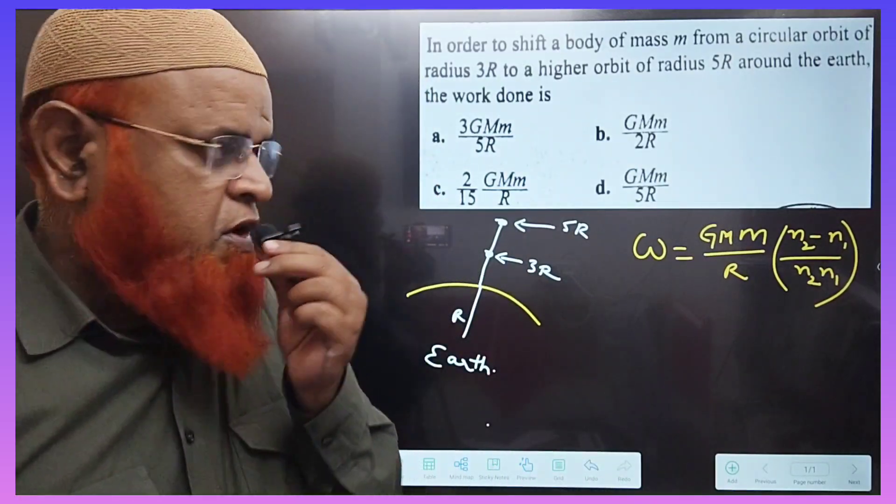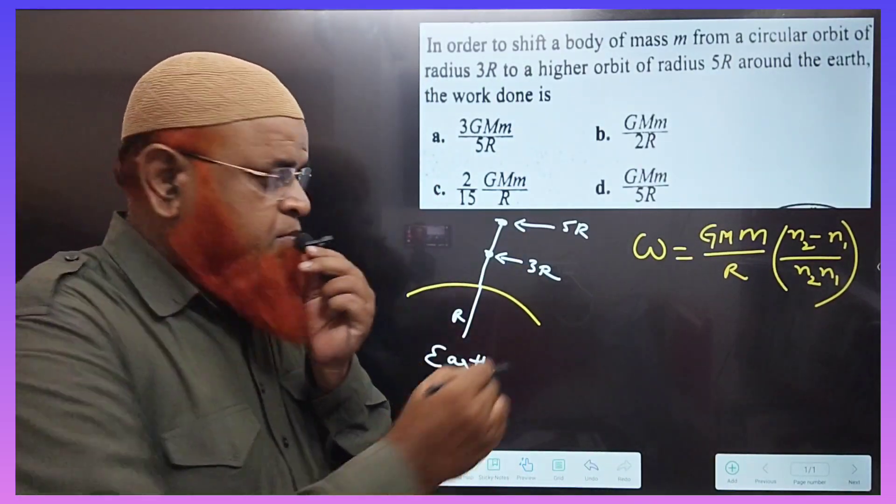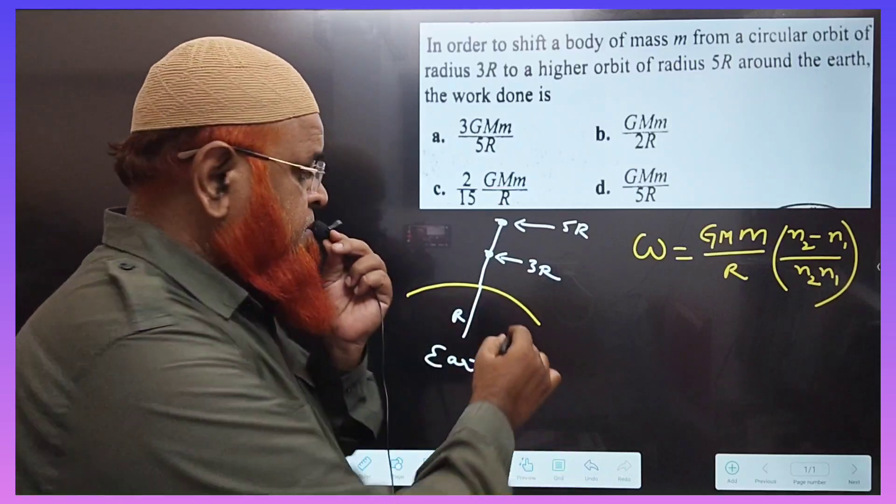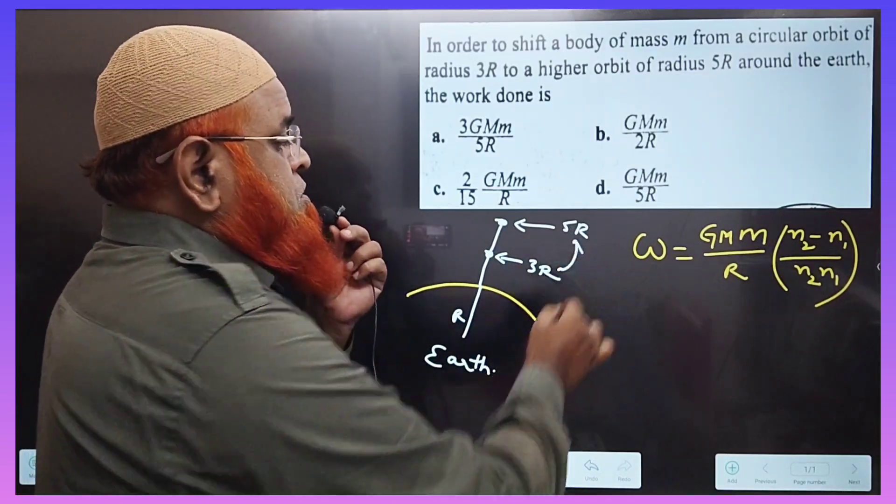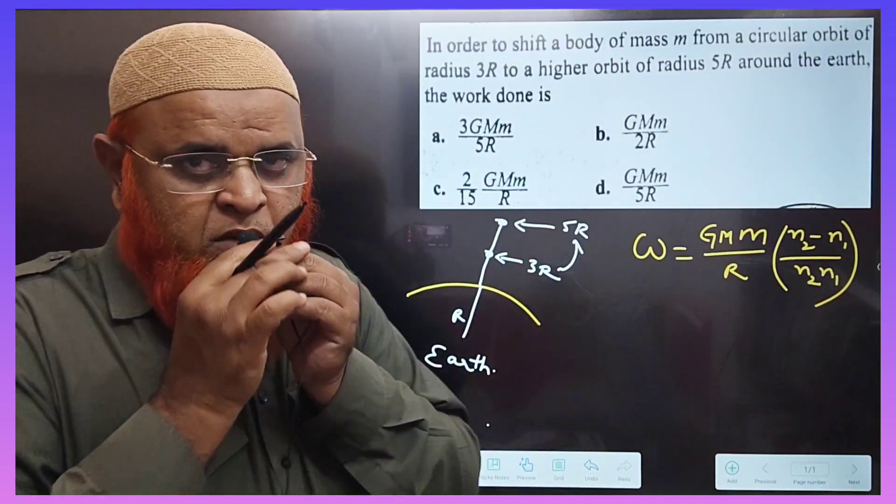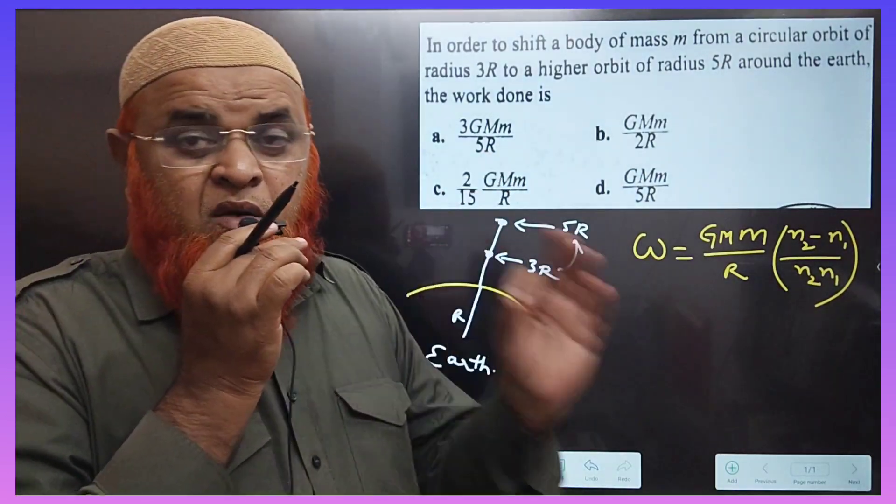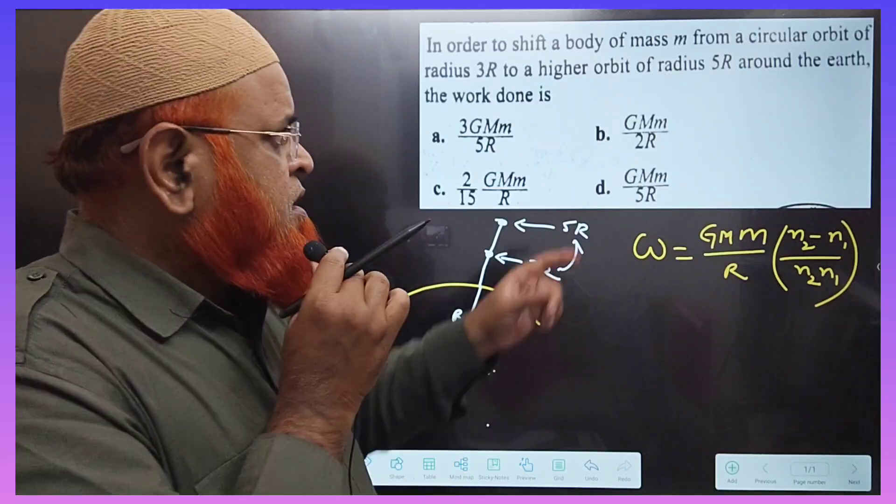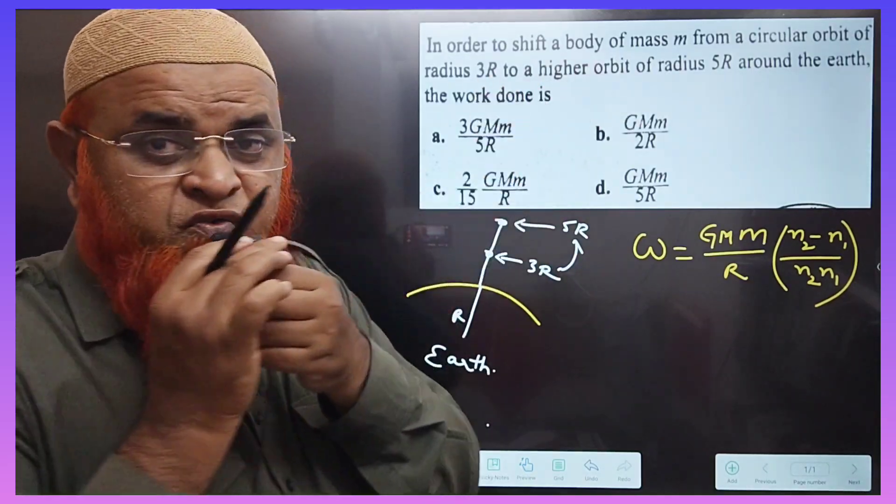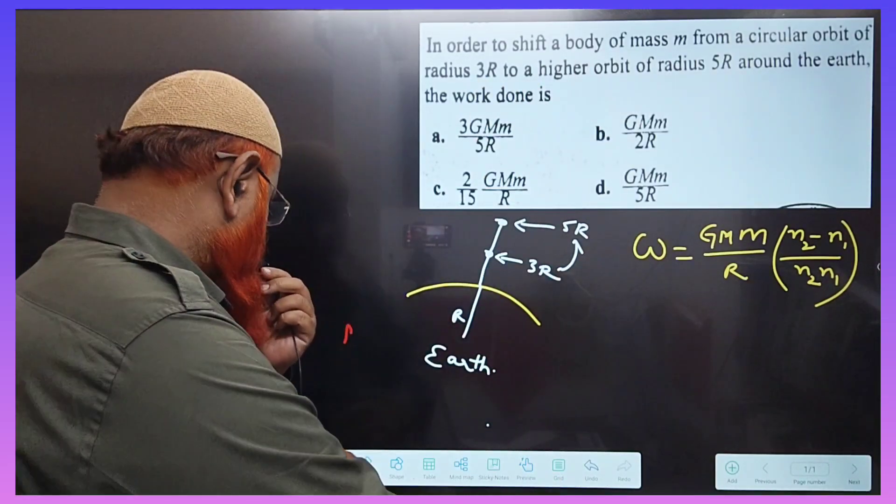My dear students, let me discuss this problem in which a body is transferred from a height 3R to 5R from the surface of the earth. What is the shortcut formula for this? From 3R to 5R means you should understand that...